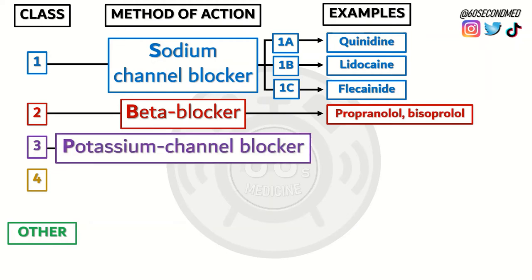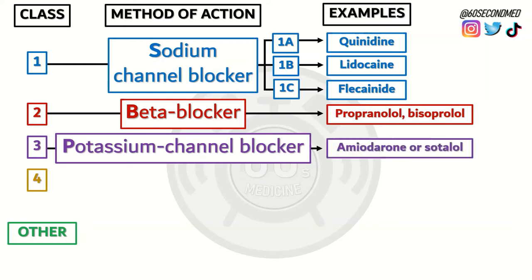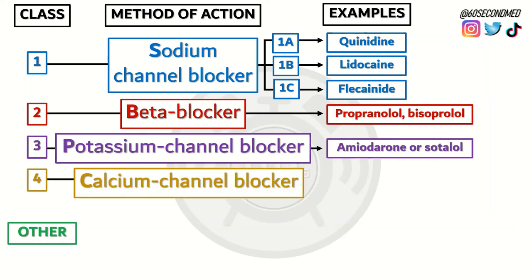Class 3 are potassium channel blockers, with some examples being amiodarone or the special type of beta blocker, sotalol. Class 4 are calcium channel blockers, with some examples being verapamil or diltiazem — non-DHP calcium channel blockers.